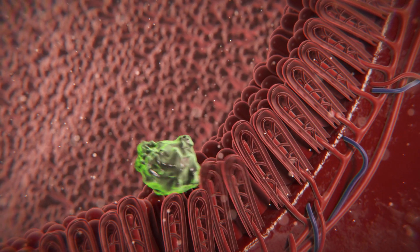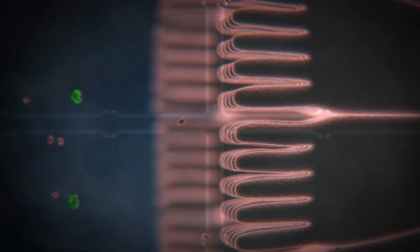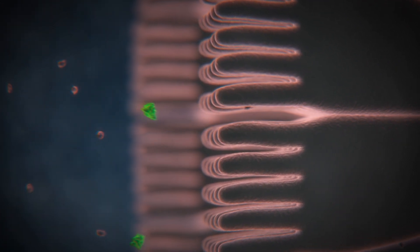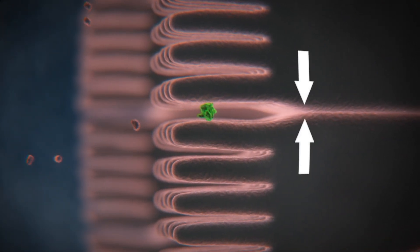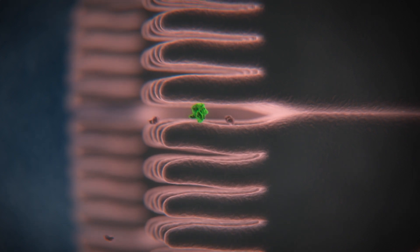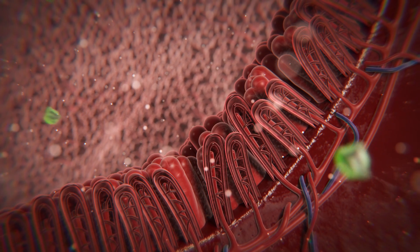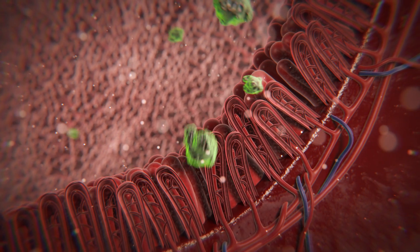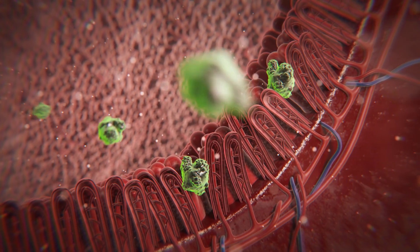An intact intestinal wall barrier prevents such disturbing factors from being absorbed into the organism. But already in the digestive tract, they permanently upset the sensitive intestinal flora and form the breeding ground for irritations and inflammatory processes.